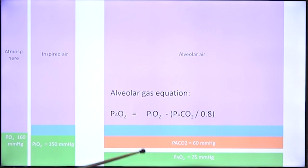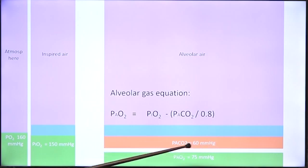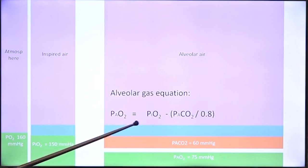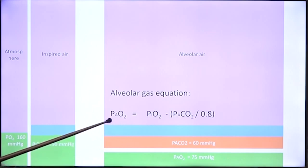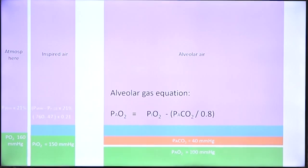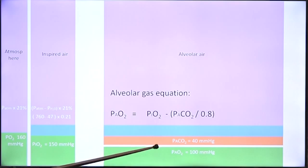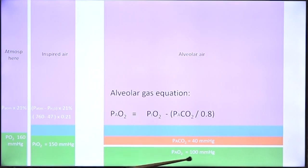If alveolar carbon dioxide were 60 mmHg, the calculations give alveolar oxygen as 75 mmHg. In the normal case, alveolar carbon dioxide is 40 mmHg, and therefore alveolar oxygen will be 100 mmHg.